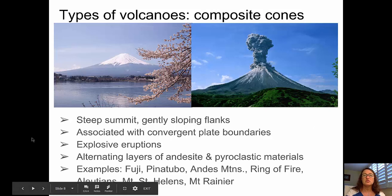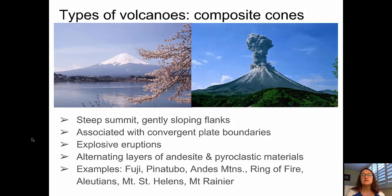Moving on to composite cones or stratovolcanoes — here we see two examples: Mount Fuji on the left and Mount Pinatubo on the right. Composite cones are typically steep at the summit with more gently sloping flanks. They are associated with convergent plate boundaries and explosive eruptions, and are typically built up of alternating layers of intermediate lavas and pyroclastic materials. Good examples include Mount Fuji, Mount Pinatubo, the Andes Mountains, and the Ring of Fire around the Pacific, including the Aleutians, Mount St. Helens, and Mount Rainier.